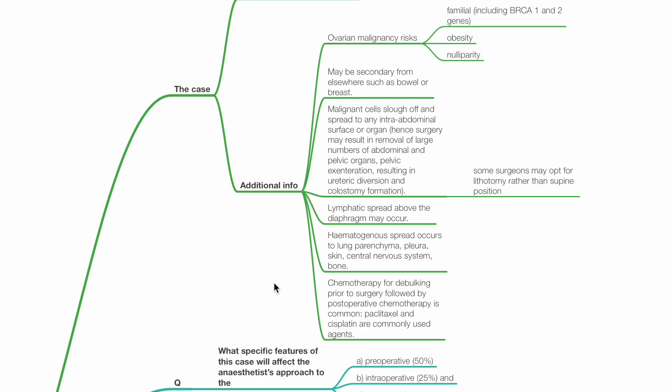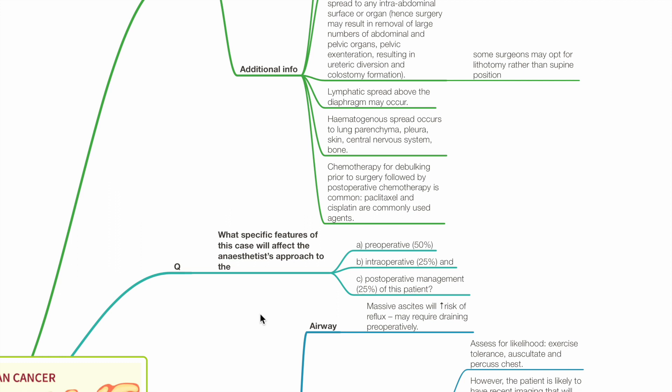Lymphatic spread above the diaphragm may occur. Hematogenous spread occurs to the lung parenchyma, pleura, skin, CNS and bone. Chemotherapy for debulking prior to surgery followed by post-op chemotherapy is common. Paclitaxel and cisplatin are commonly used.